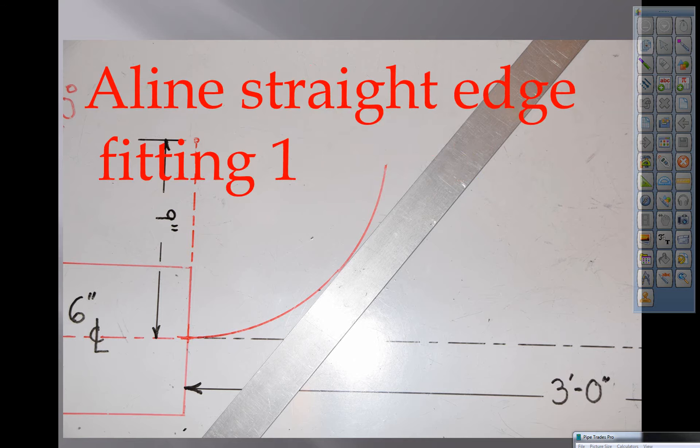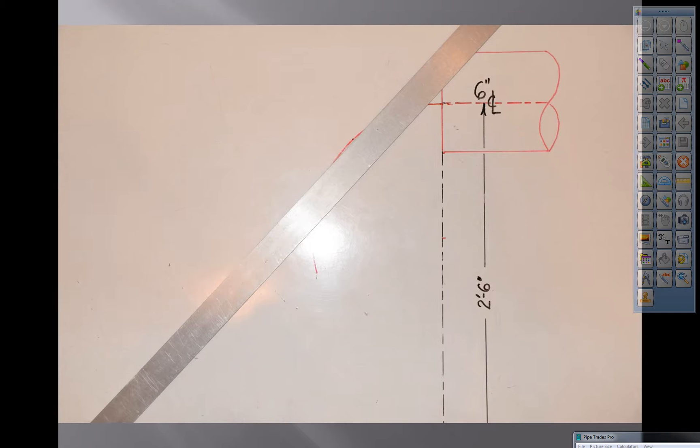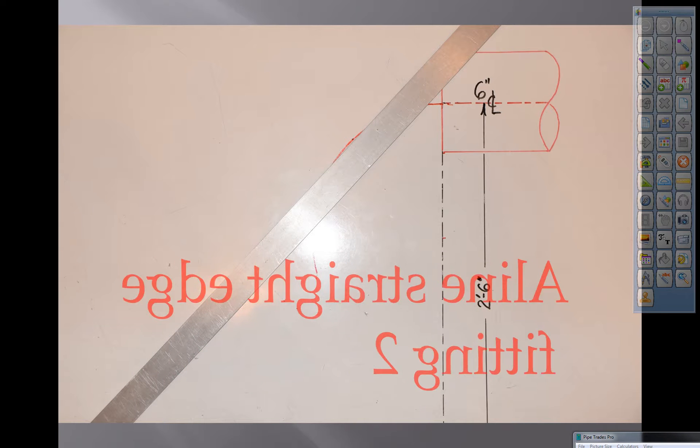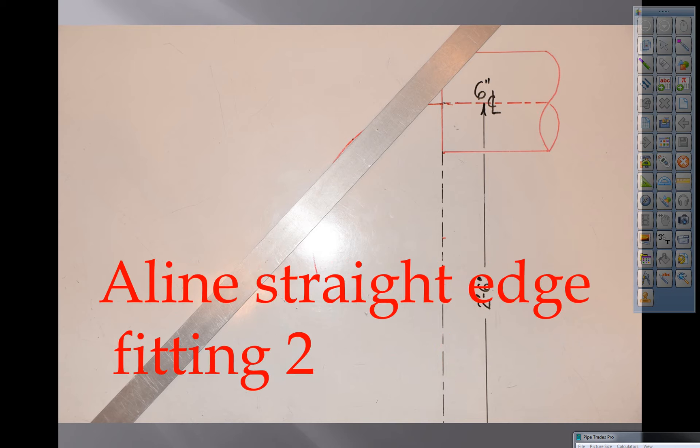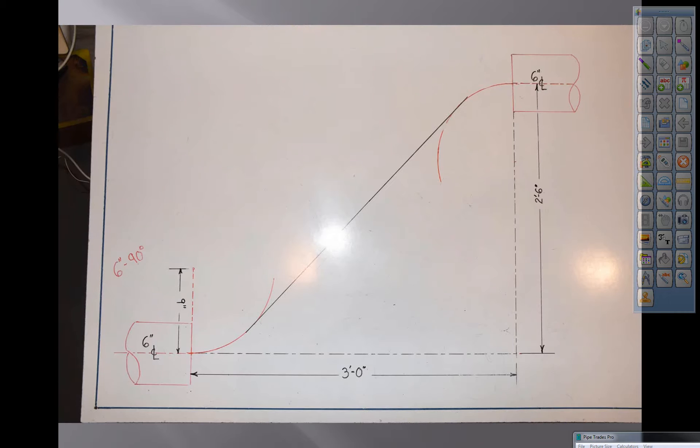Align the straight edge over fitting one to your left. Take account for the thickness of the marker. This is fitting number two, the one up on top. That's what you should be looking at right now. That's your end result.